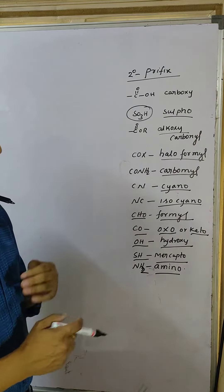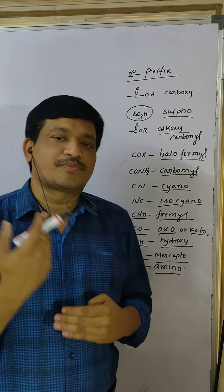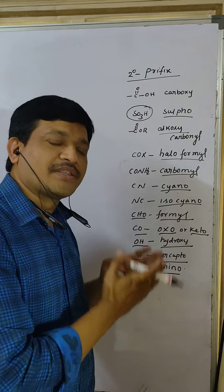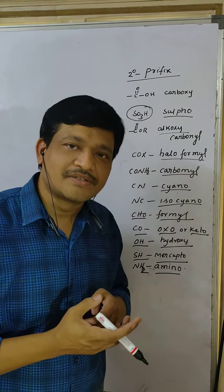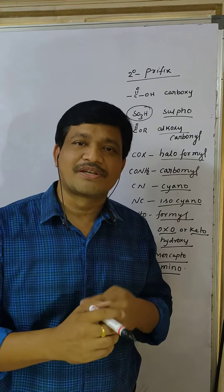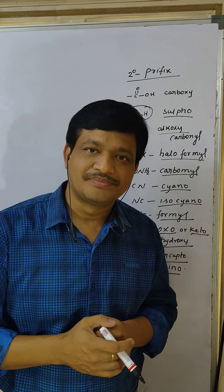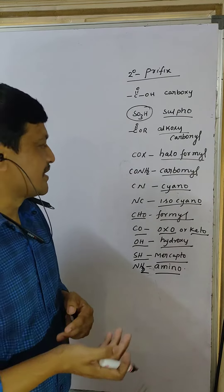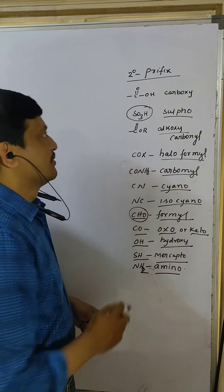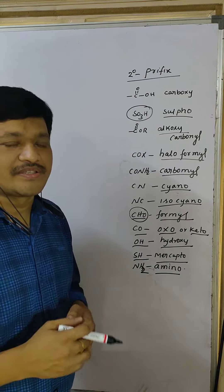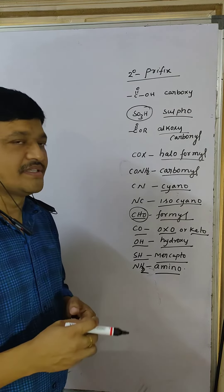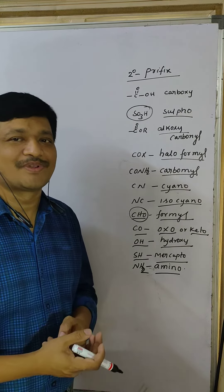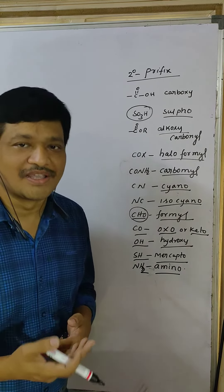Suppose a second priority group is present — when first priority is given to the principal functional group, these are the second priority groups. At that time, you have to write the prefix names — secondary prefix names. For example, if carboxylic acid and aldehyde are both present, first priority is given to carboxylic acid, and aldehyde gets a secondary prefix. What is the secondary prefix for aldehyde?